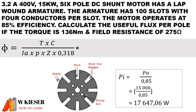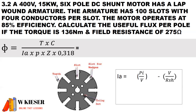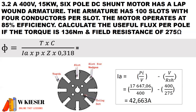Before we can substitute the values, we first have to determine the armature current, which is not given. Since efficiency is given, we're going to be using power input in our formula because this is a motor. To calculate the input power, it is the power output divided by the efficiency — the input power is larger and the output power is smaller. The armature current for a motor is always minus, so it's the supply current minus the shunt current. Input power is 17,647.06 watts divided by the terminal voltage of 400. The shunt current is the terminal voltage of 400 divided by the shunt resistance of 275. Therefore the armature current is 42.663 amps.